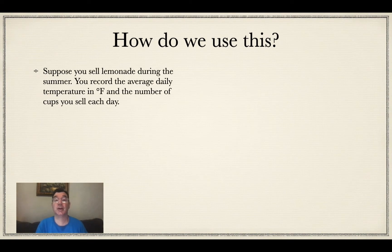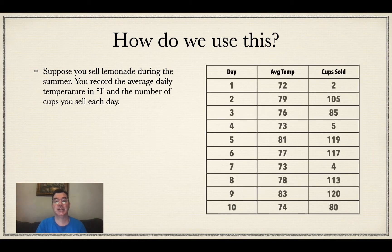So here's how we do it. Let's go through an example. Let's say you wanted to sell lemonade during the summer and you record the average daily temperature in degrees Fahrenheit and the number of cups that you sell each day. So there's a table of the data right there for 10 days.